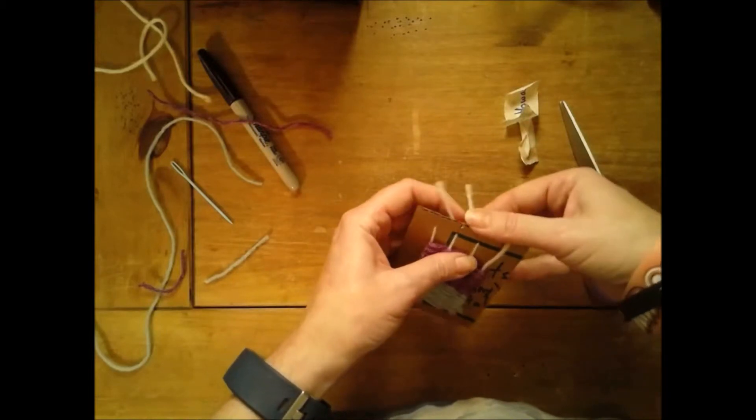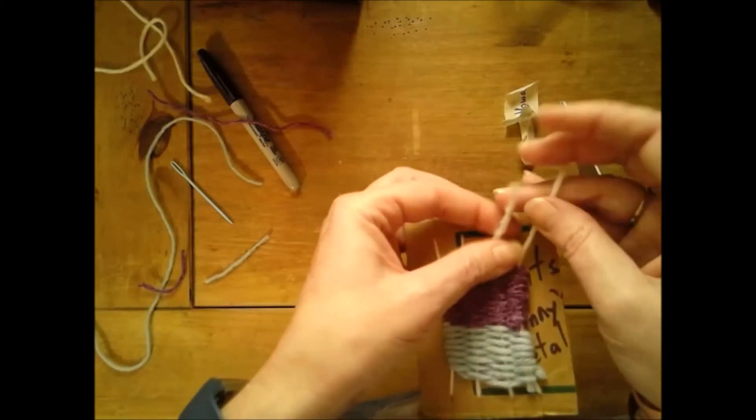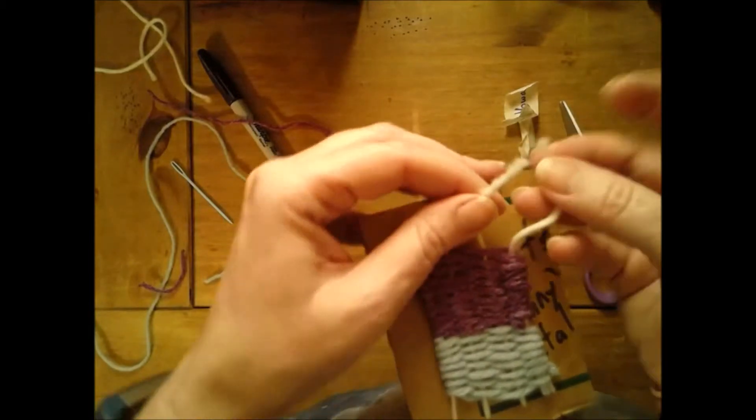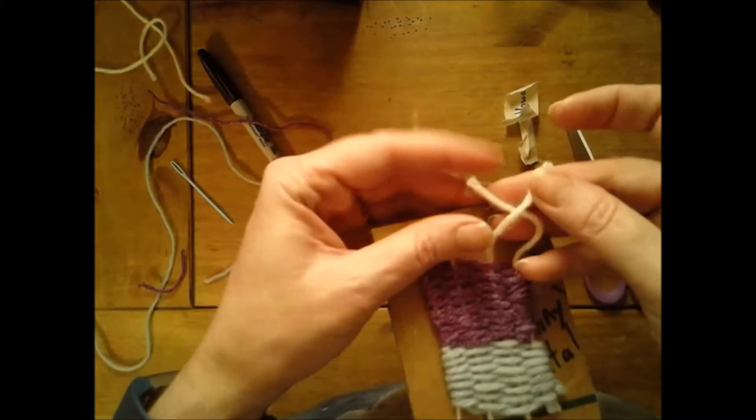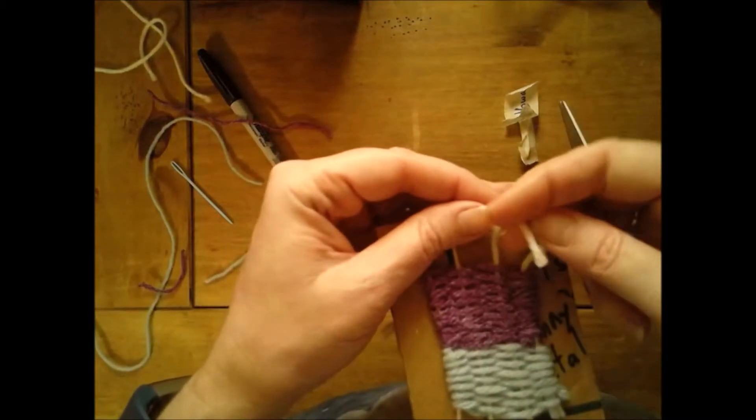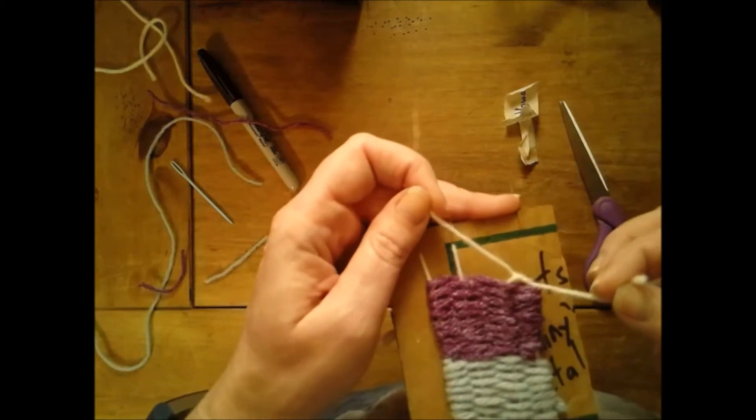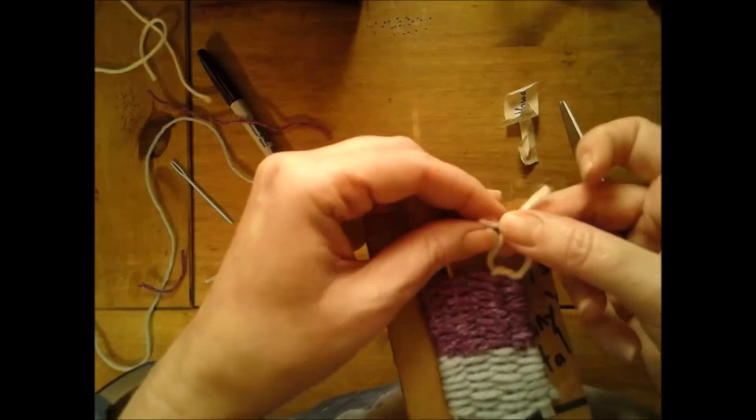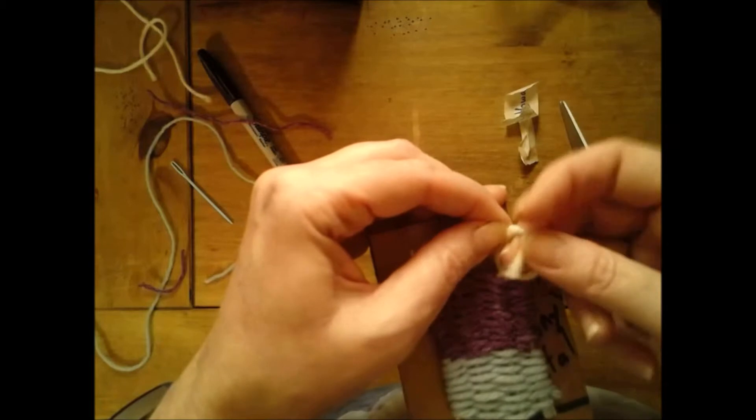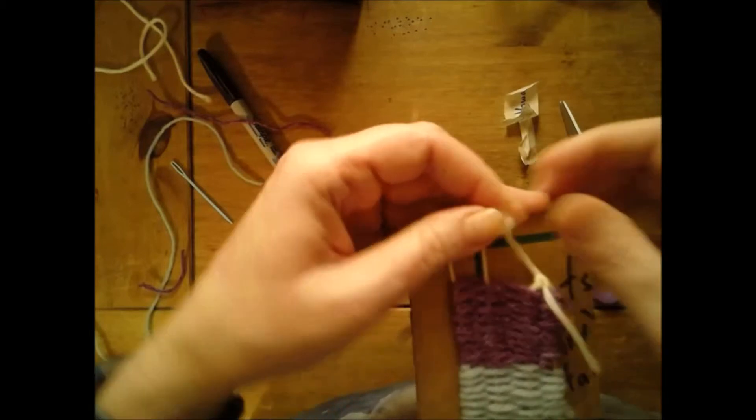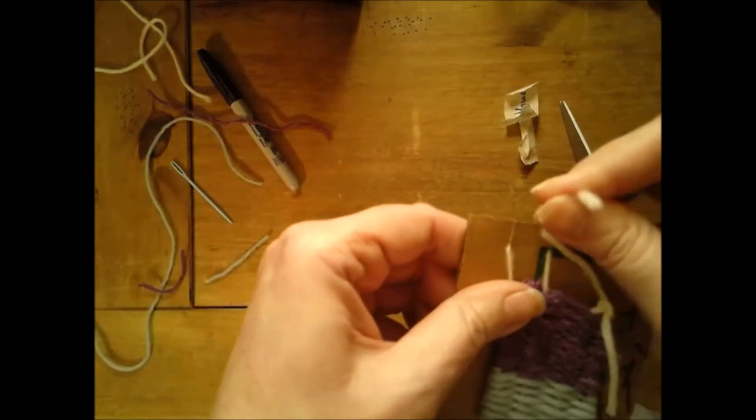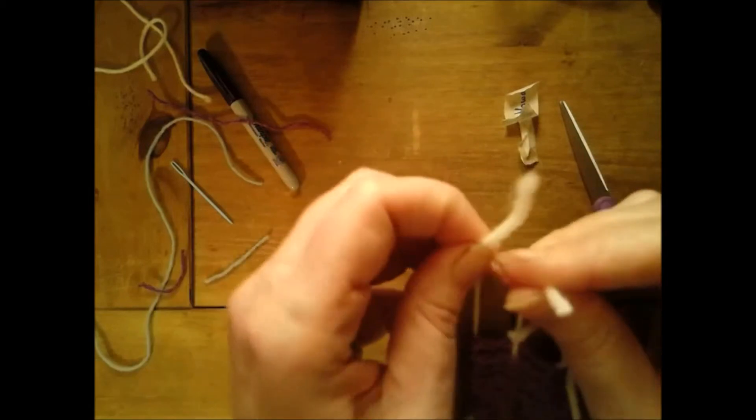I'm going to tie knots in them, so I'm going to cross them, put this through the loop, and I'm going to do that two times. And I need to do that for all of my ends.